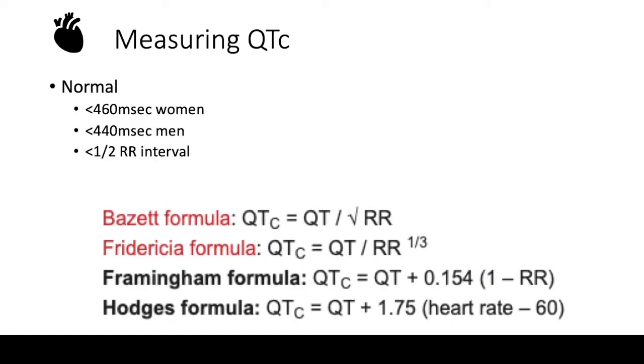So when we talk about QT interval, a normal QT interval is different for men and women. A QT greater than 460 milliseconds is prolonged in women, greater than 440 milliseconds is prolonged in men. But a quick way to know if someone has QT prolongation is to check if it's more than half of the R-to-R interval. If the T wave ends more than half of the R-R interval, then you know this patient likely has QT prolongation.